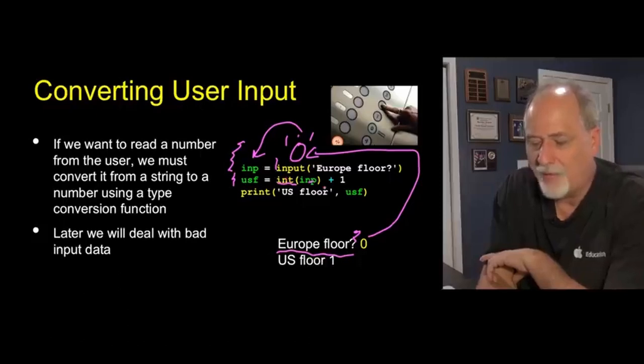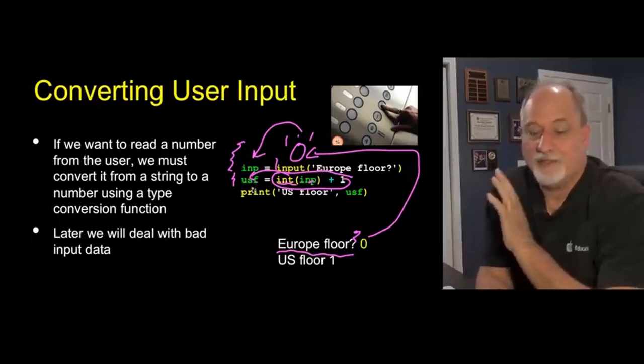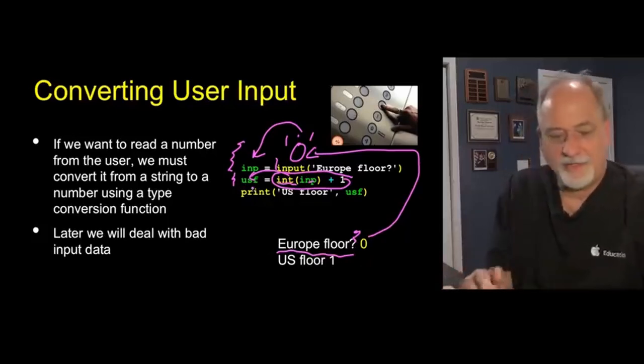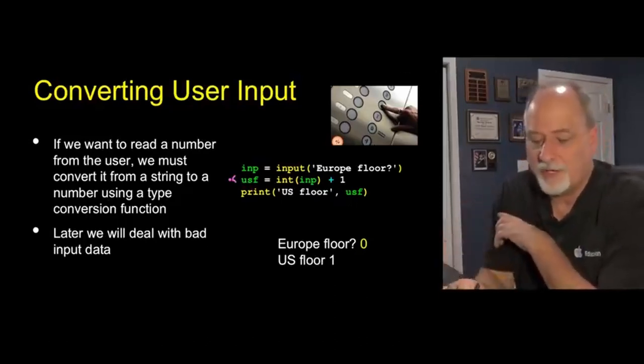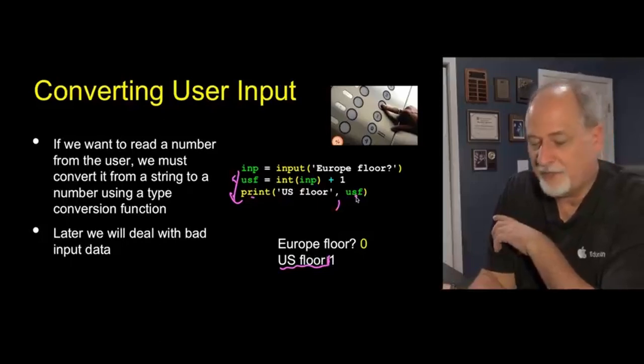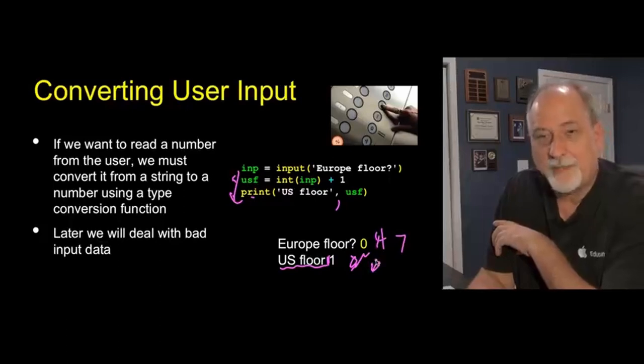Program starts. We do the input side effect. It prints out this and then waits. We type in zero. That comes back here. And the zero, which is a string. Input gives you back a string. It doesn't give you back a number. So, quote zero quote, which is what we typed here. We didn't type the quotes. It's a string. It gets stored in the inp variable. Then we move to the next statement. And on this right-hand side, we convert that string variable to an integer. So that becomes the integer zero. We add one to it, and then that becomes one. And then we assign that into USF. I've named this variable United States floor.